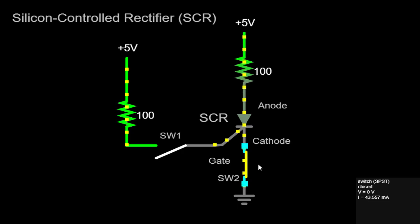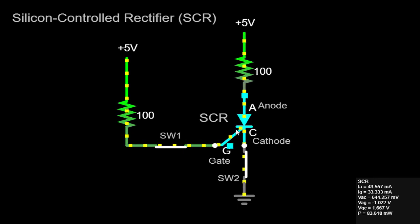To summarize the operation of the SCR circuit, when we close SW2, allowing current to flow, and simultaneously apply a positive pulse to the gate terminal via SW1, the SCR turns on, enabling current to pass from the anode to the cathode. This inherent characteristic of the SCR makes it an ideal component for controlling high-power circuits, as it provides a reliable means of switching current on and off.